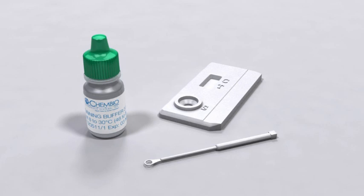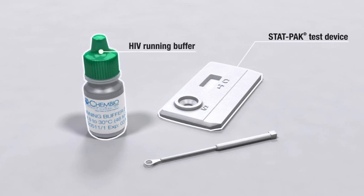The STATPAC HIV-1 and 2 test consists of the following components: the STATPAC HIV-1 and 2 test device, HIV running buffer bottle, green cap, and a disposable 5 microliter sampling loop.